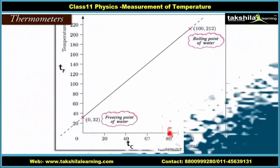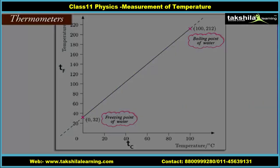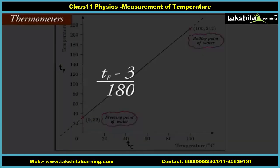A relationship for converting between the two scales may be obtained from a graph of Fahrenheit temperature Tf versus Celsius temperature Tc, a straight line whose equation is: (Tf − 32) / 180 = Tc / 100.